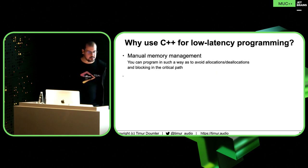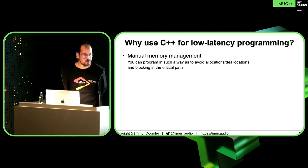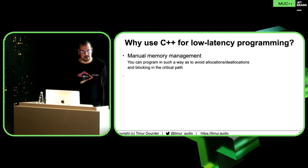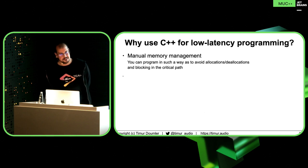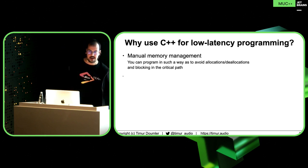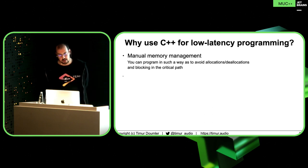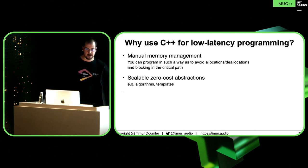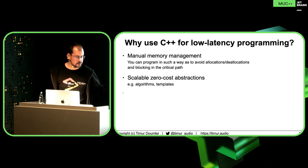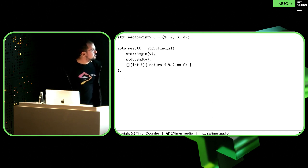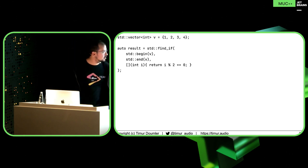So the question is: why do we use C++ for that? For some reason C++ seems to be an especially good language for these things. One reason is we have manual memory management, which has a downside — it's not safe, and there's a big discussion going on about that on the committee right now. But it lets you control on a very low level what's happening. You can program in a way that avoids things like allocations and deallocations, which you don't want to do in a hot path. The other thing C++ has that C doesn't have so much is scalable zero-cost abstractions — algorithms, templates, concepts now, and all kinds of other stuff. We can do this at scale and still have maintainable code.